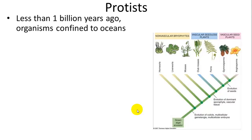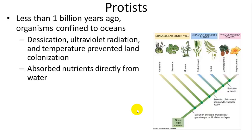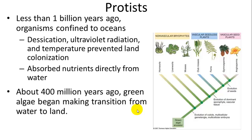Protists are less than a billion years old. They were originally confined to oceans, and what kept organisms from going onto land was desiccation or drying out, exposure to UV radiation — water absorbs a lot of UV radiation — and high temperatures. But about 400 million years ago, a green algae broke through and gained properties which allowed it to not dry out, and it made the transition from water to land. From there, evolutionary events led to the rise of green plants.